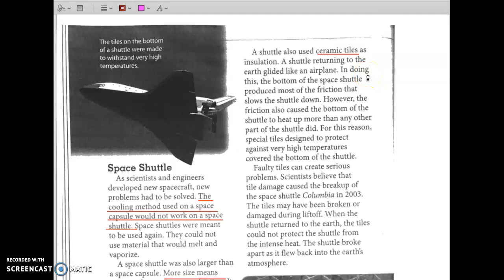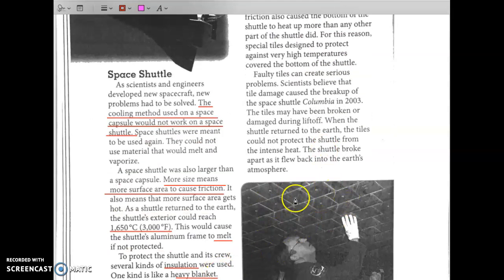A shuttle returning to the earth glided like an airplane. In doing this, the bottom of the space shuttle produced most of the friction that slows the shuttle down. However, the friction also caused the bottom of the shuttle to heat up more than any other part of the shuttle did. For this reason, special tiles, these guys, were designed to protect against very high temperatures, cover the bottom of the shuttle. So why do they put the tiles on the bottom of the shuttle? Yup, because the bottom of the shuttle overheats the most, so the tiles are used to protect the bottom against the high temperature. Very good.